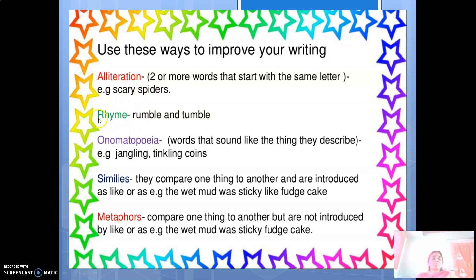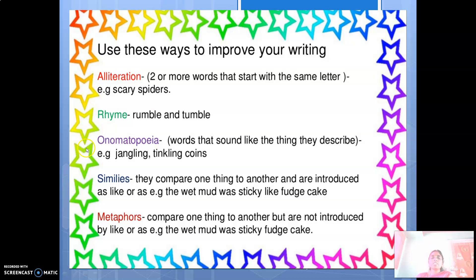Next is onomatopoeia — words that sound like the thing they describe. For example, when you are tossing coins and the coin is falling down, what is the noise? Tinkling coins. Tinkling is the sound made by the coin — that is what onomatopoeia means. The words represent the sound of the specified things.